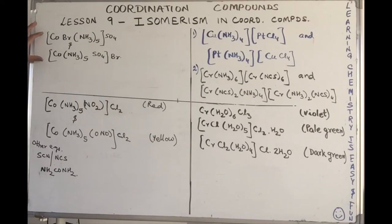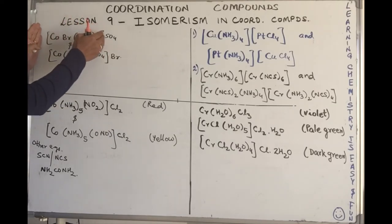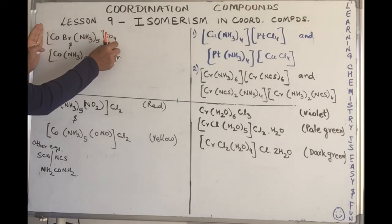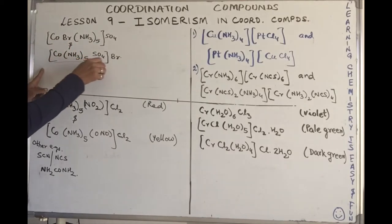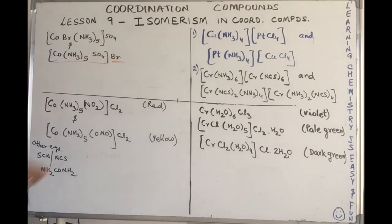So the first one, this is the example that I've already discussed when we're talking about isomerism. If you notice, the ions which are formed are different. When you break this, this is one complex ion and sulfate is the other ion which is formed on ionization, whereas if this breaks down, this is one complex ion and bromide is the counter ion.